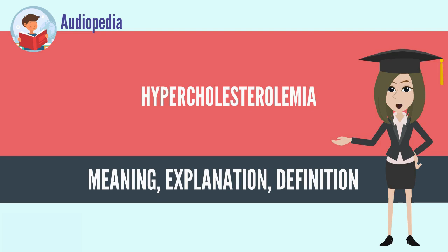It is also the precursor of the steroid hormones and bile acids. Since cholesterol is insoluble in water, it is transported in the blood plasma within protein particles called lipoproteins. Lipoproteins are classified by their density: very low density lipoprotein (VLDL), intermediate density lipoprotein (IDL), low density lipoprotein (LDL), and high density lipoprotein (HDL).